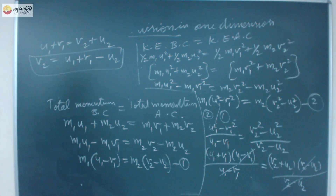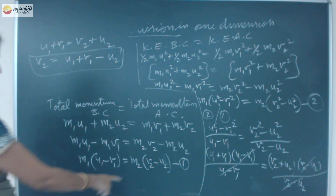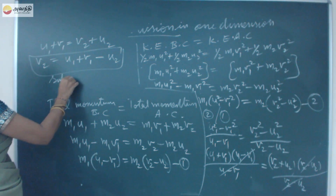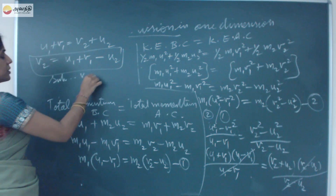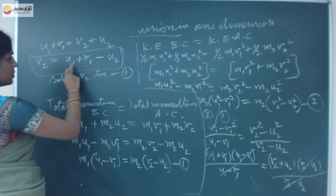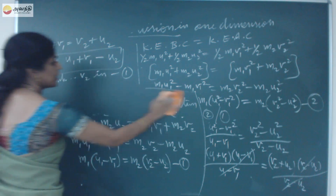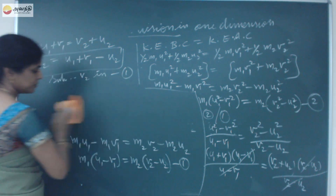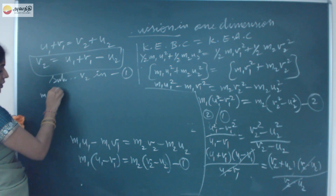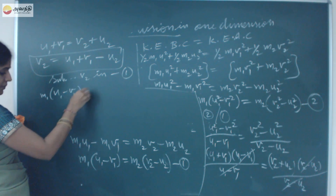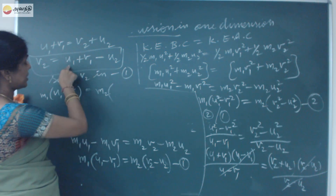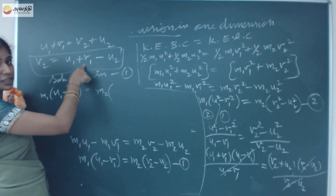Rearranging, V2 equals U1 plus V1 minus U2. Now I am going to substitute this expression for V2 into equation 1: M1(U1 minus V1) equals M2 times V2, where V2 is replaced by (U1 plus V1 minus U2).